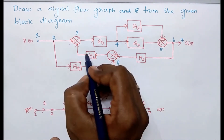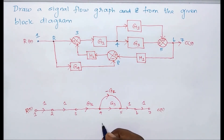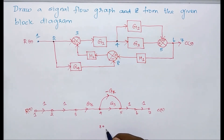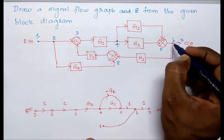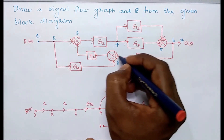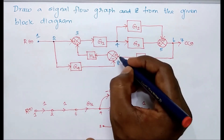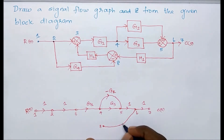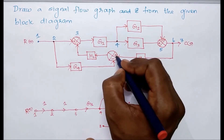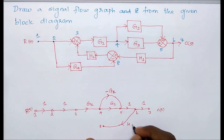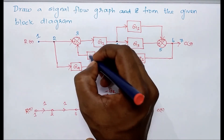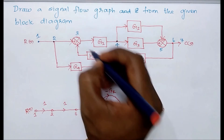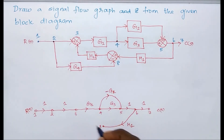Next, we consider node eight. From node six to node eight, it is a feedback path because it comes and connects towards node three. Its gain value is h1, and here it is positive, so it is plus h1. There is one more feedback from node eight going towards node three, but it is negative, so we use minus h2.